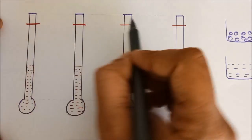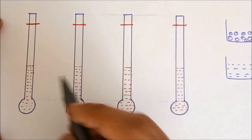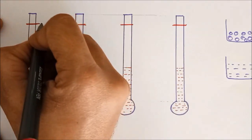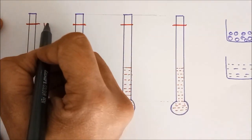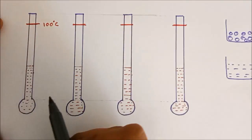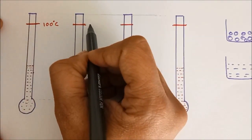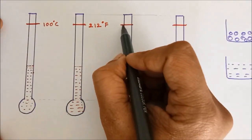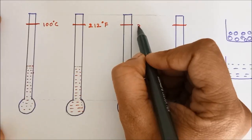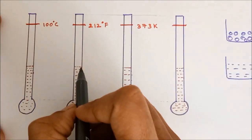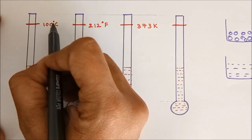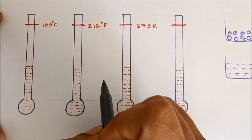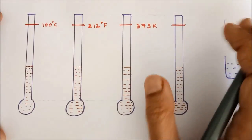These are the final heights at which the mercury is going to climb. Celsius gave this marking as 100 degree Celsius, Fahrenheit gave this marking as 212 degree Fahrenheit, and Kelvin gave this marking as 373 Kelvin. Make sure that we always say degree Celsius and degree Fahrenheit. We say degree Kelvin but we never write degree K.